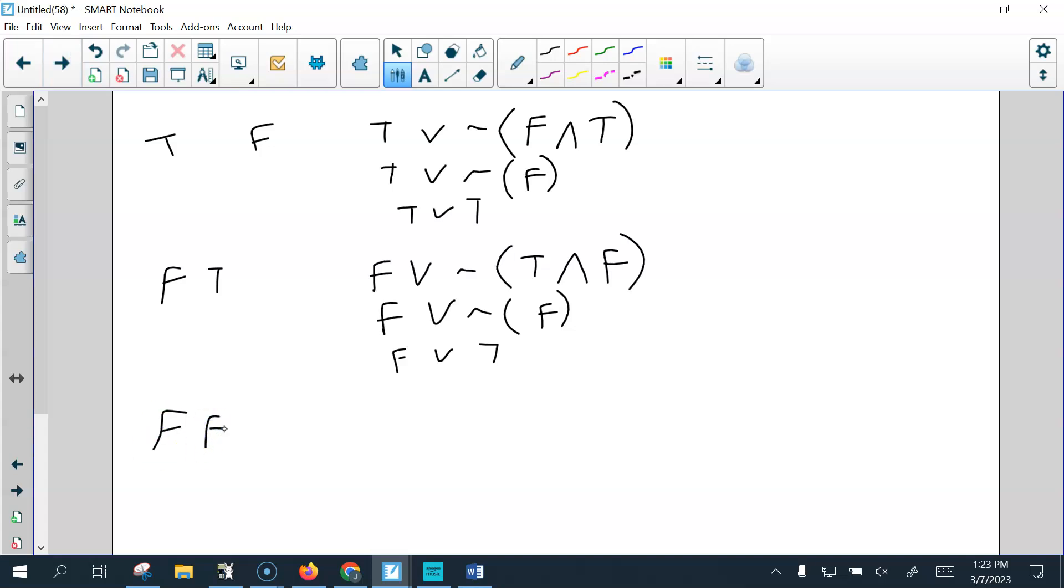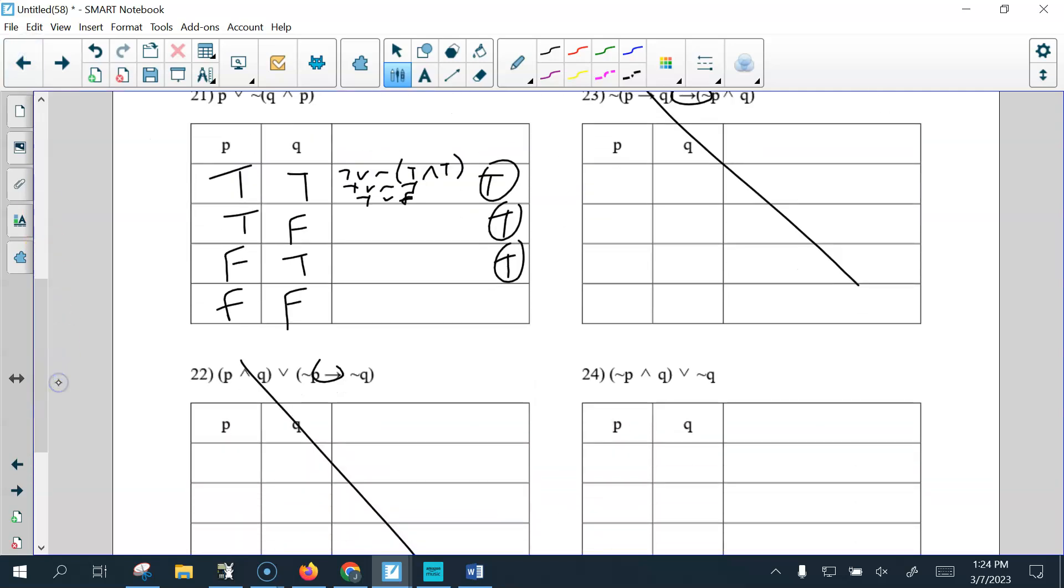And last would be FF. So, that gives us false, or, not, and this is easy, because they're both F, false and false. So, that's false, or, not, false, which is false, or, true, which again, brings us back to true.